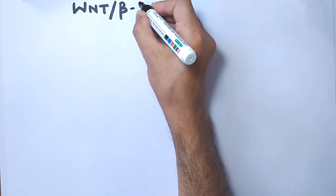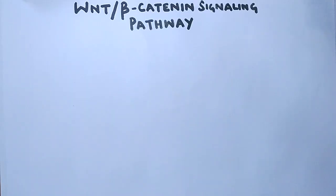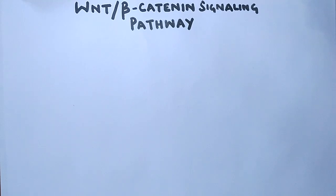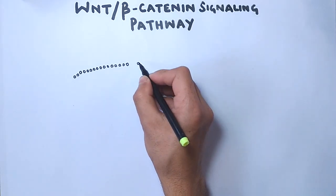Hello friends, in this video we will be discussing the WNT-beta-catenin signaling pathway. This pathway is essential for developmental processes and controls diverse functions related to embryonic development.